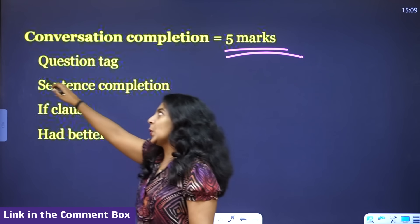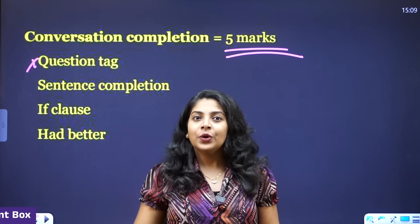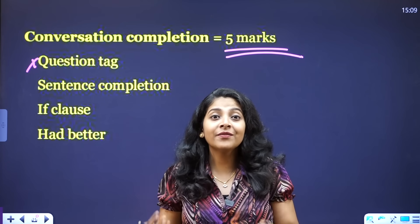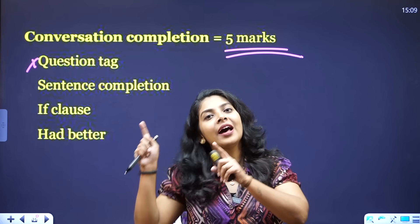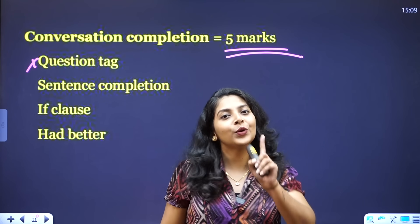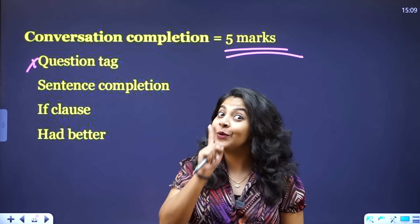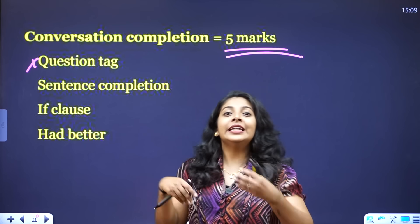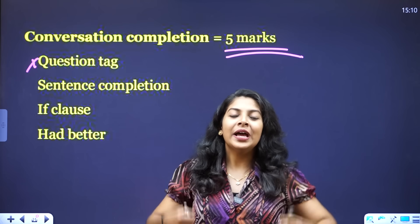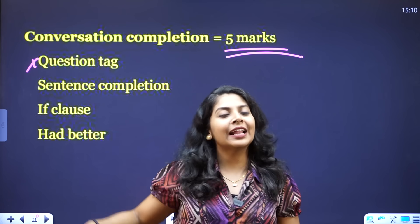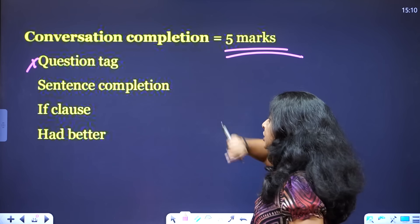That is a question tag. For example: 'You are coming with me, aren't you?' — 'Didn't you? Haven't you? Aren't you?' That is a question tag.